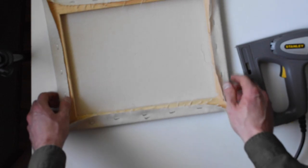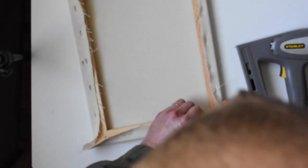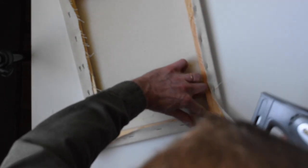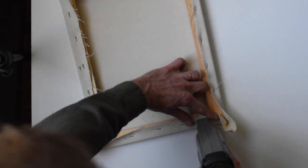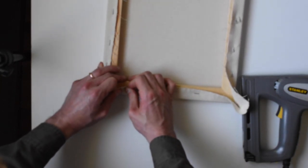So working your way to the corners of your piece. You can see that he's not going to staple in the corner section. He's getting as close to the corner as possible, and then he'll start gearing up to do the corners where you're going to be folding the canvas.